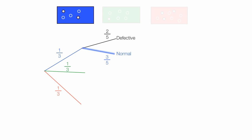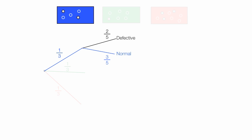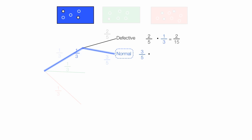If I take the defective and the normal branch and add them together, that is three-fifths plus two-fifths, which adds up to five-fifths or one. Once I pick a box, I will either pick a defective or normal part. To calculate the probability of picking the blue box then picking a defective part, I take two-fifths times one-third, which equals two over fifteen. To calculate the probability of picking the blue box then picking a normal part, I take three-fifths times one-third, which equals three over fifteen.